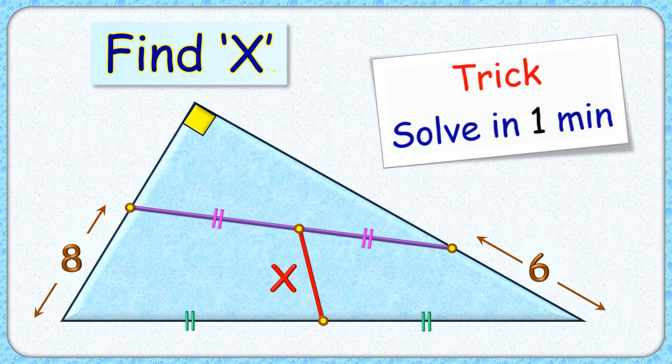Welcome everyone. This interesting question given to us is a right angle triangle with a purple line segment inside it. The distances are given as 8 centimeter and 6 centimeter.